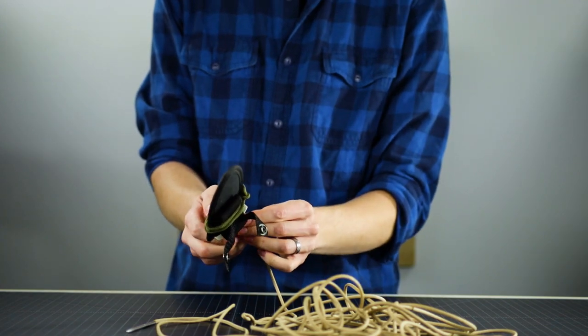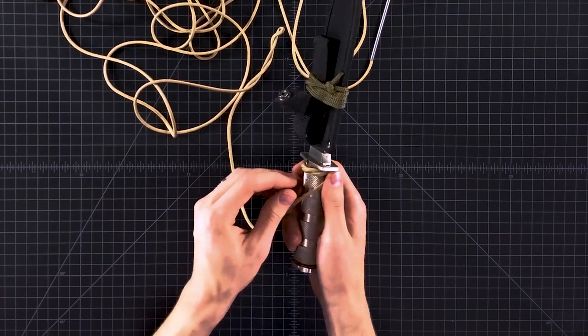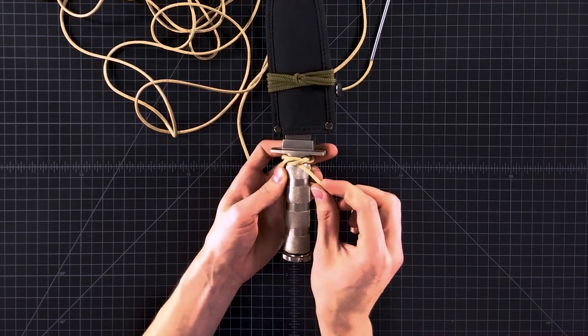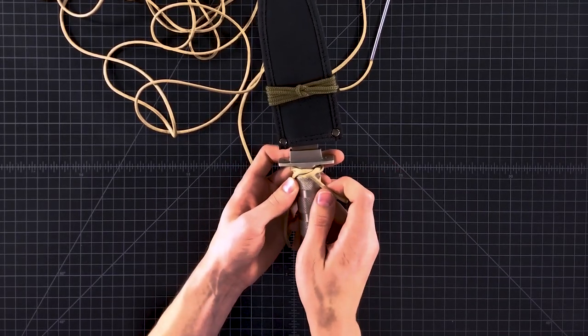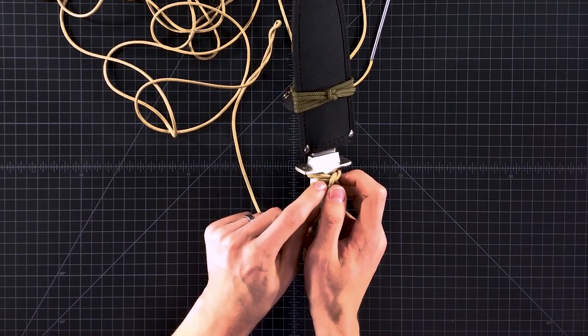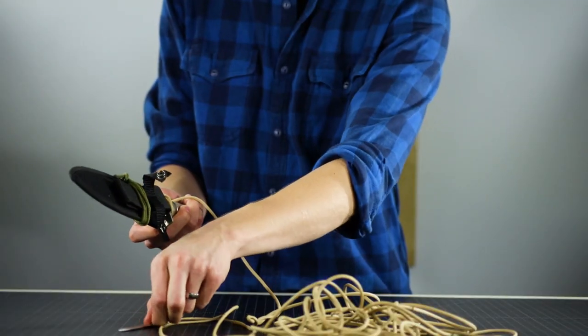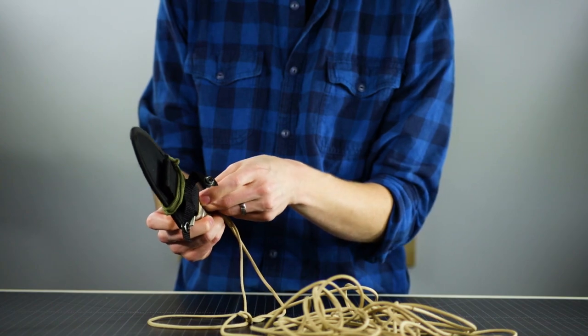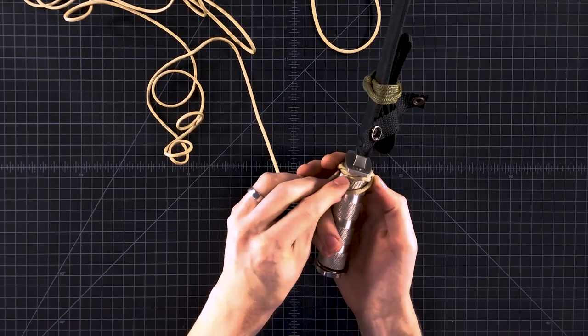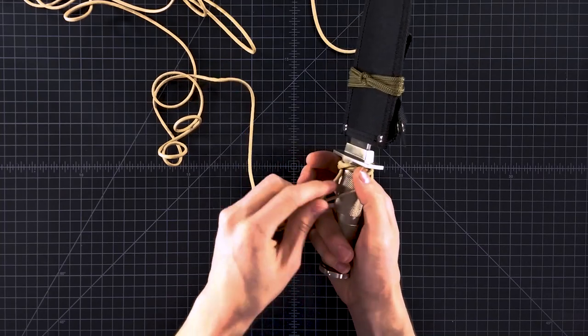And now, as we continue on to the next layer, we're going to be looping up through each of these loops. So we want to make sure we aren't looping through this layer, but through the one that we wrapped around. So this one here travels over to here. So this is the first loop that we're going to want to go through.